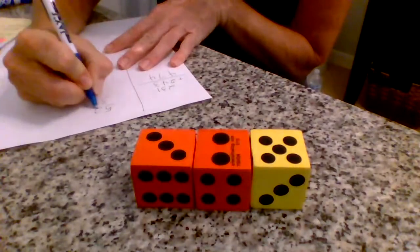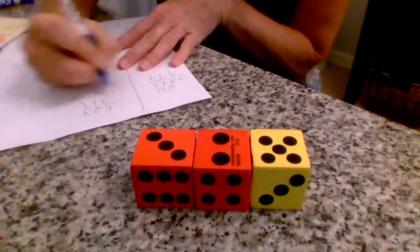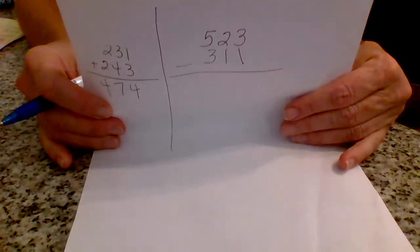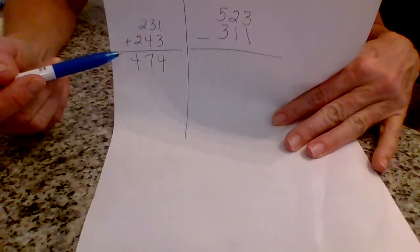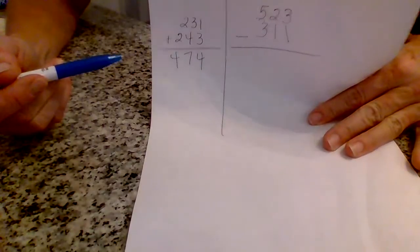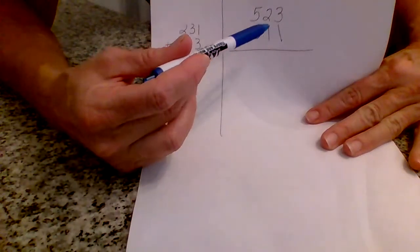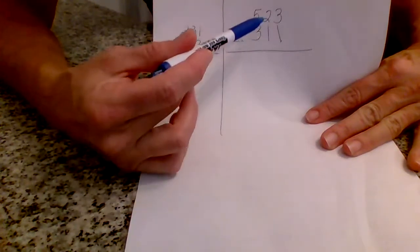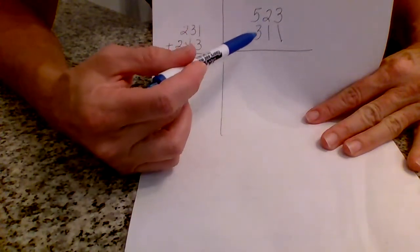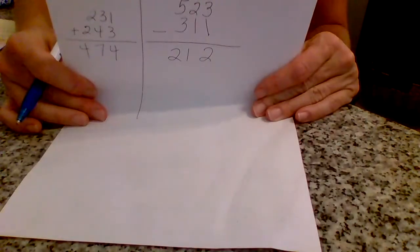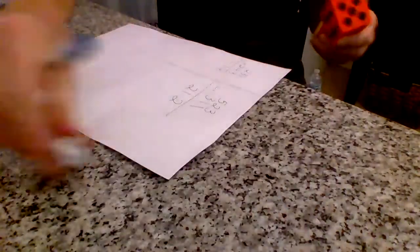So I'm going to put 523 on top and then I'm going to subtract. Remember, addition you can put those numbers in any order, it won't matter. But for subtraction, greater number on top. Then subtract: 3 minus 1 is 2, 2 take away 1 is 1, and 5 take away 3 is 2. So the difference is 212.